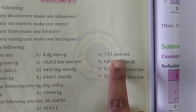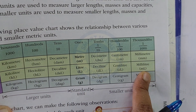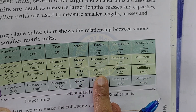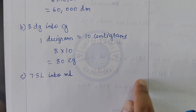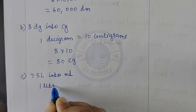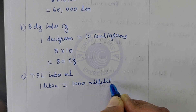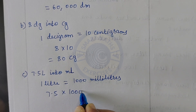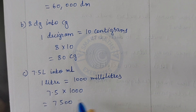Convert 7.5 liters into milliliters. We are converting from liter to milliliter — larger unit to smaller unit, so we multiply. Liter to deciliter is 10, deciliter to centiliter is 100, centiliter to milliliter is 1000. So 1 liter equals 1000 milliliters. Multiply 7.5 by 1000: the answer is 7500 milliliters.